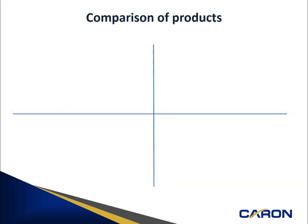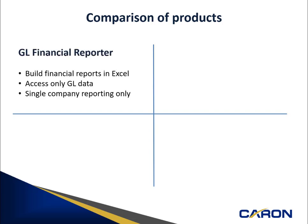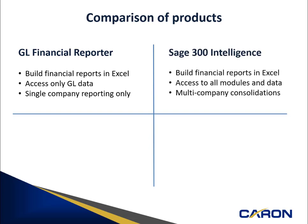Our clients often ask us how SAGE Intelligence compares to other reporting tools. Let's consider financial statements. Long-term users of SAGE 300 know that financial statements can be created with the GL Financial Reporter, which allows you to build reports in Excel, which is great. However, you are limited to accessing GL data only, and you are limited to single company reporting only. SAGE Intelligence also allows you to build reports in Excel, and you can access all modules and data, and multi-company consolidations.